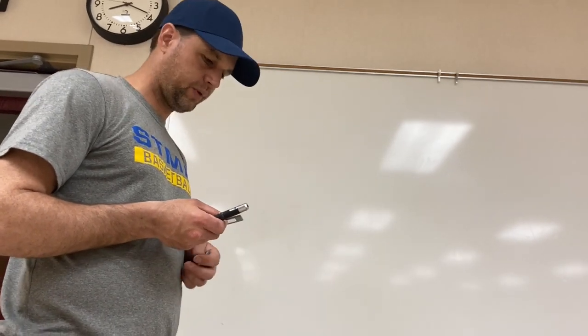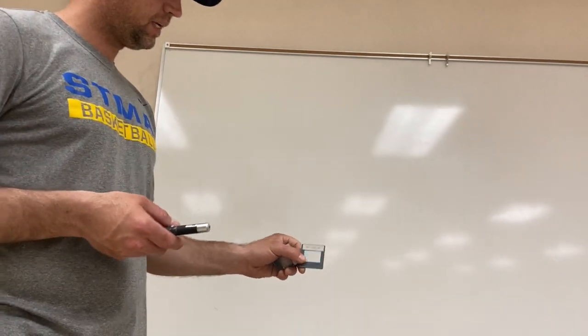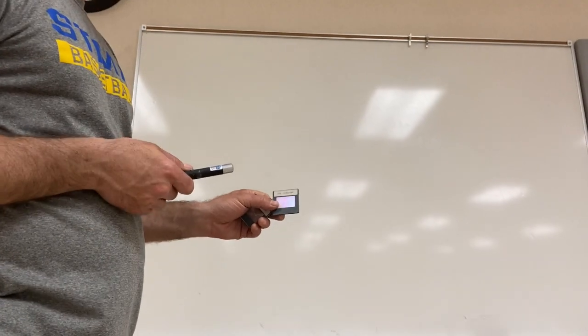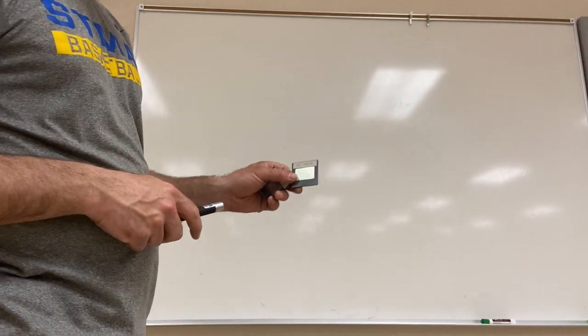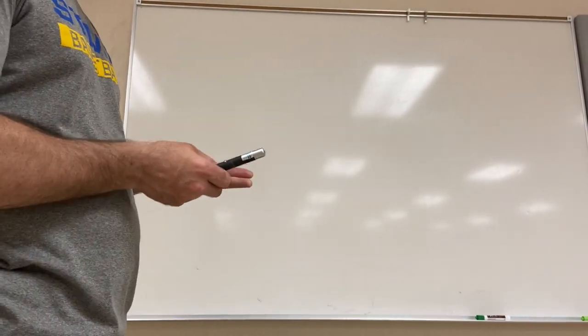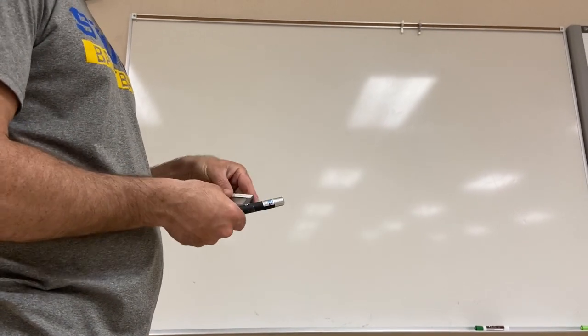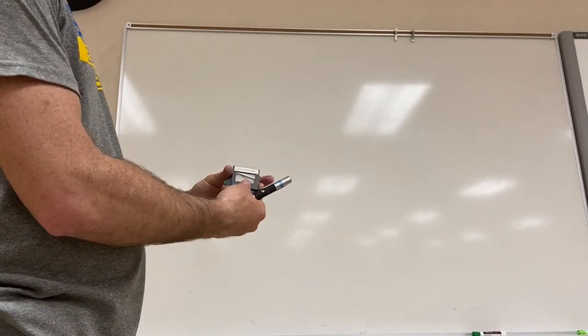Okay, I've got some diffraction gratings. So what this is, is somebody has taken and cut a whole bunch of little grooves in here. It's 600 grooves per millimeter. This one is 300 grooves per millimeter, and this one is 100 grooves per millimeter.